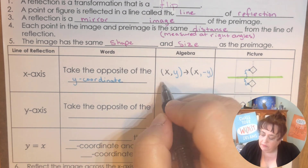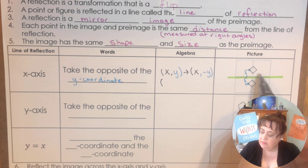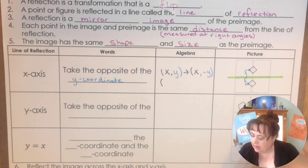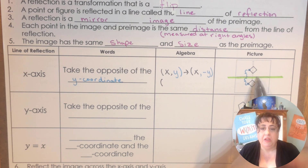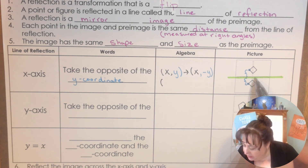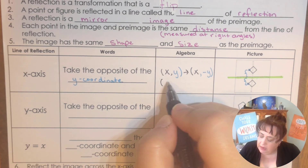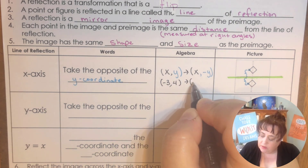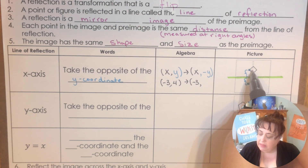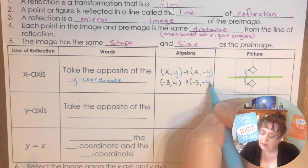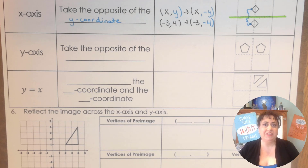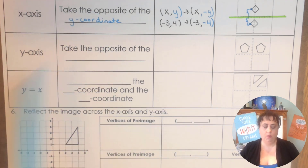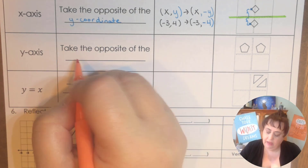For example, if I had the coordinate — let's say it's about negative three — and let's say the Y is four, then the new one: the X stays the same, but the opposite of four is negative four. Now let's look at the Y-axis. In the X-axis we did the opposite of the Y coordinate. In the Y-axis, we're going to take the opposite of the X coordinate.